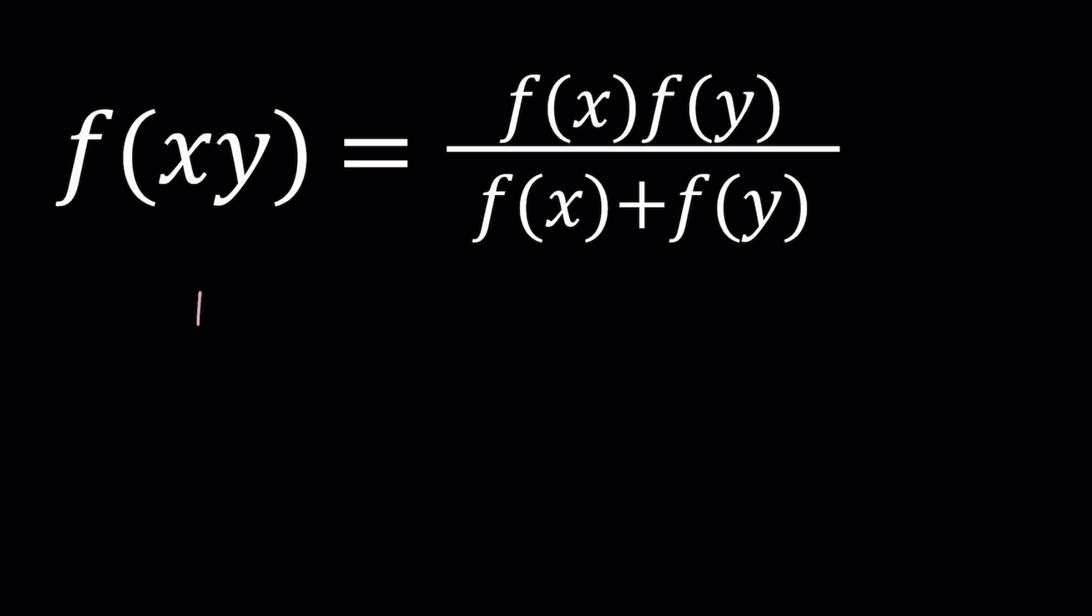So let's go ahead and do that. Let's flip both sides. We're going to get one over f of xy. Of course you don't want f of xy to be zero in this case.